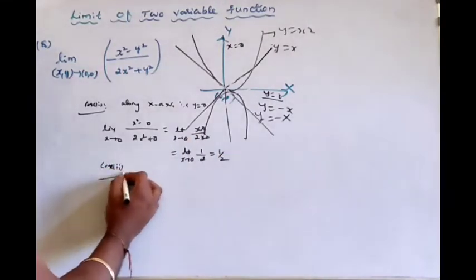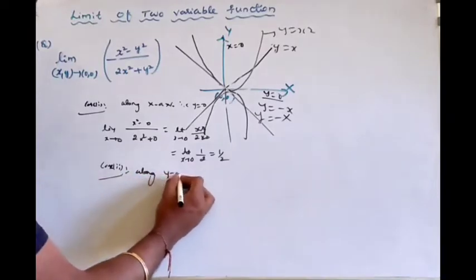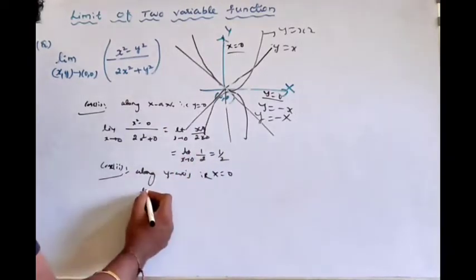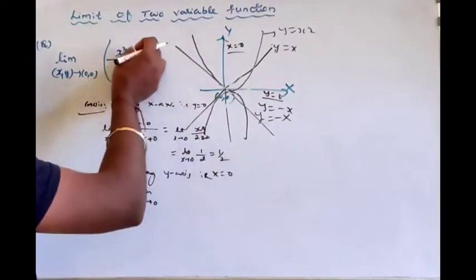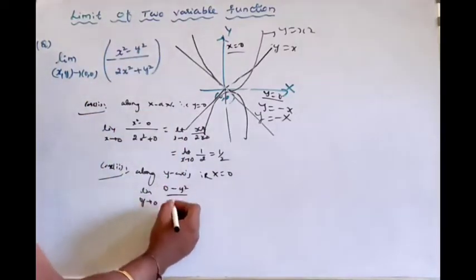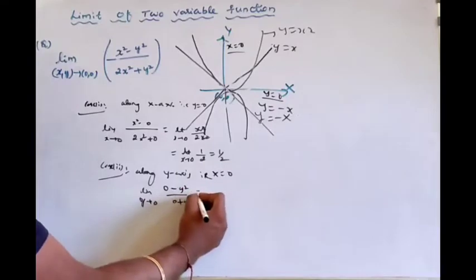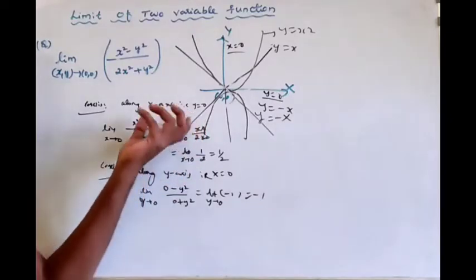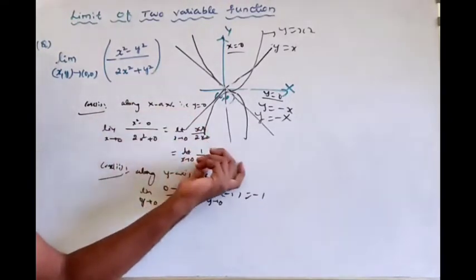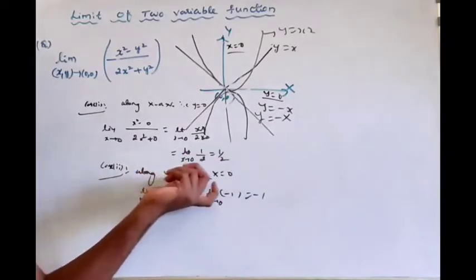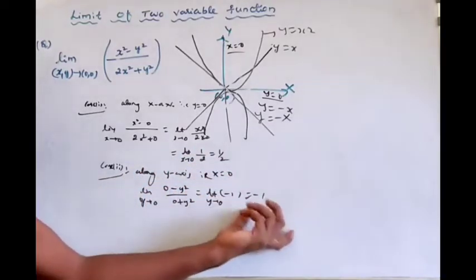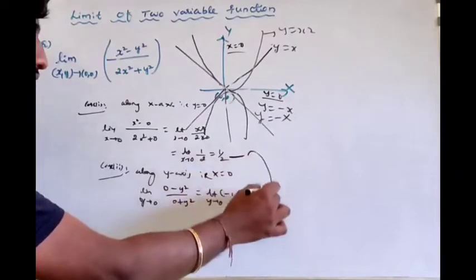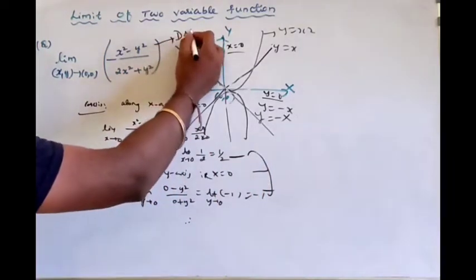The value along the x-axis is 1/2, and the value along the y-axis is minus 1. These are different values along different paths. Since the values along different paths are not equal, therefore the limit does not exist.